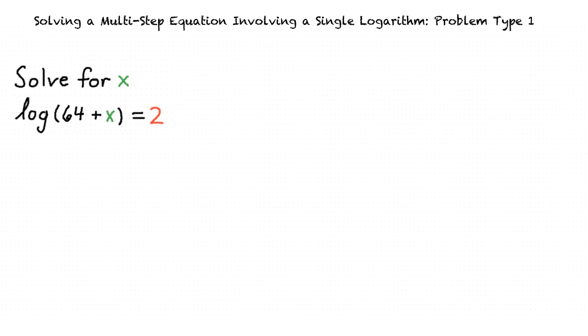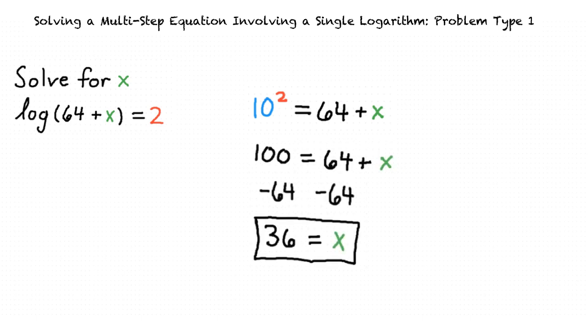Knowing this, we can rewrite this logarithmic expression in its exponential form, which would be 10 squared equal to 64 plus x. Solving this equation for x, we find that x is equal to 36.